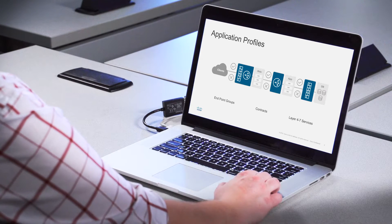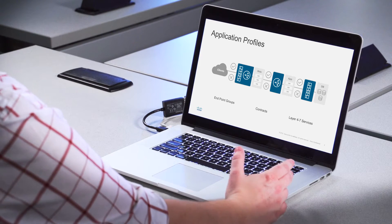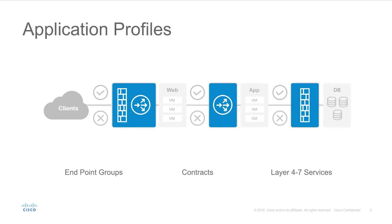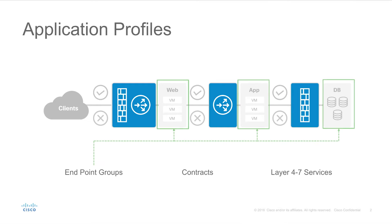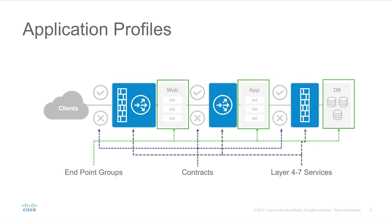In ACI we have what are called application profiles. If you're familiar with UCS service profiles, it's not entirely different from those. It allows us to easily assign policy to endpoints and basically puts the 'application centric' in ACI. Application profiles consist of three things: endpoint groups, contracts, and layer four through seven services.